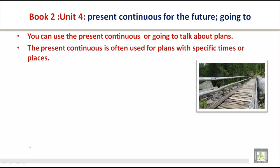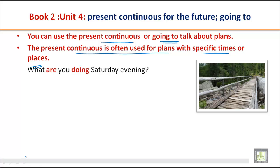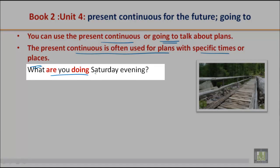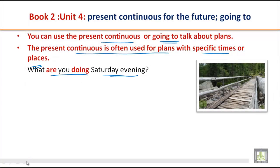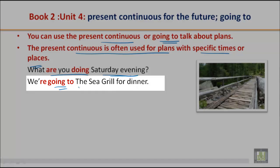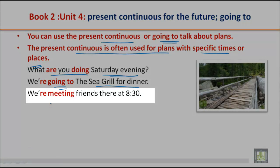Now you can also use present continuous or 'going to' to talk about plans. The present continuous is often used for plans with specific times or places. Remember that we use the be-form of the verb plus the verb and -ing. For example: 'What are you doing Saturday evening?' — we are asking about your specific plan for Saturday evening. 'We are going to the Sea Grill for dinner.'